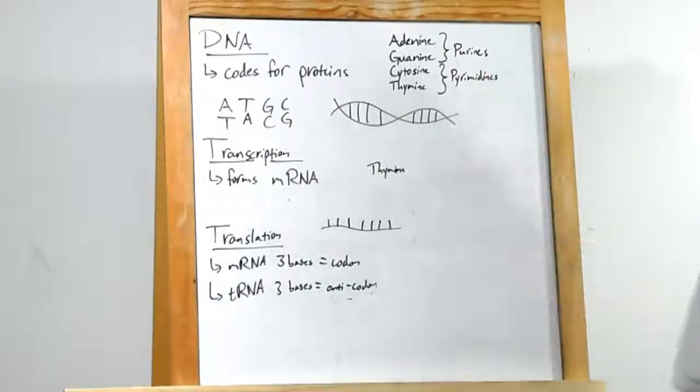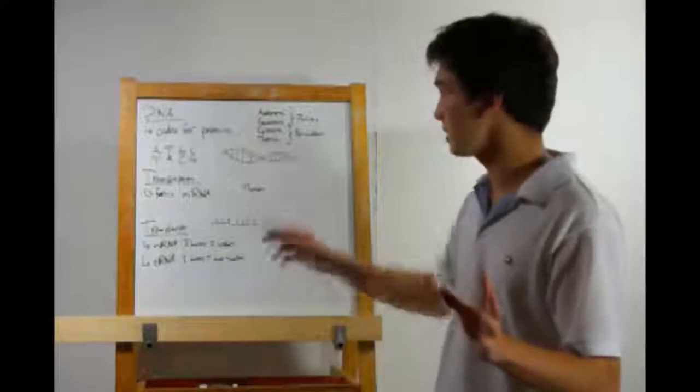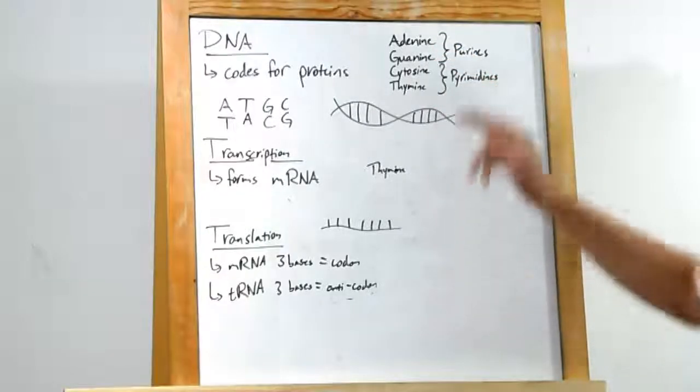Now, adenine and guanine are the purines. Cytosine and thymine are the pyrimidines. You'll need to know that for class. An easy way to remember that, nine is a pure number, adenine and guanine both end with nine, and they're both purines.